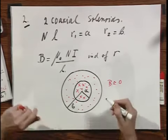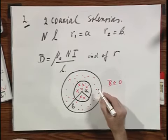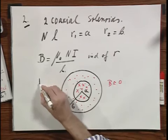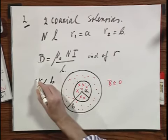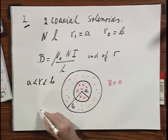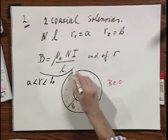So the answer, what the magnetic field is, is quite simple. The magnetic field is only nonzero when R is less than B and larger than A. And that is the value that you see here.